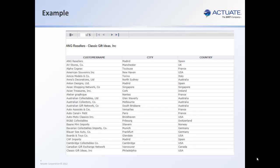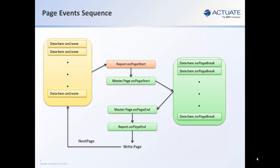In the example I'm going to build, I want to display the name of the first and last customer for each page in the header of the master page. I will need to add script to three methods: the on-page start of the report, the on-page break of the customer name data item, and the on-page end of the master page. Let's see how it works in BIRT Designer.